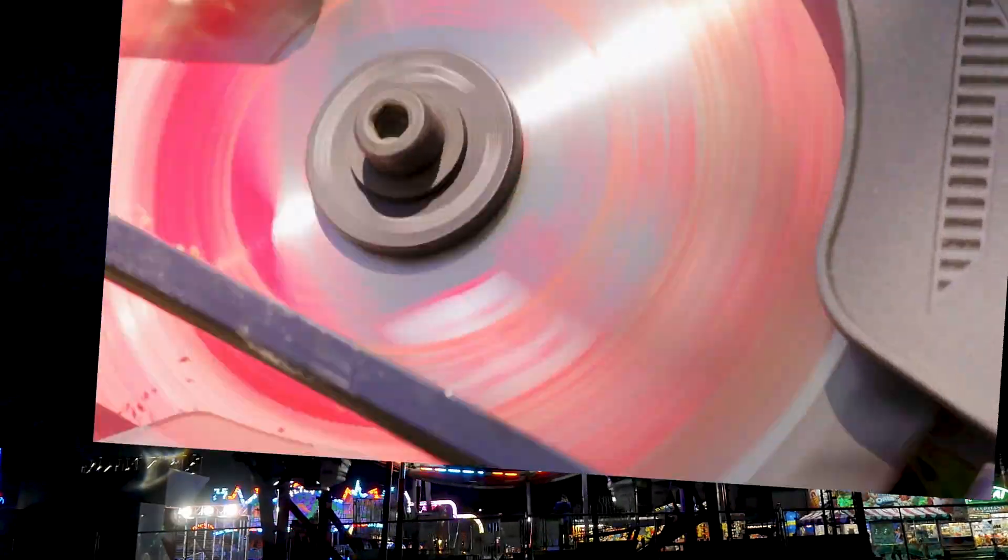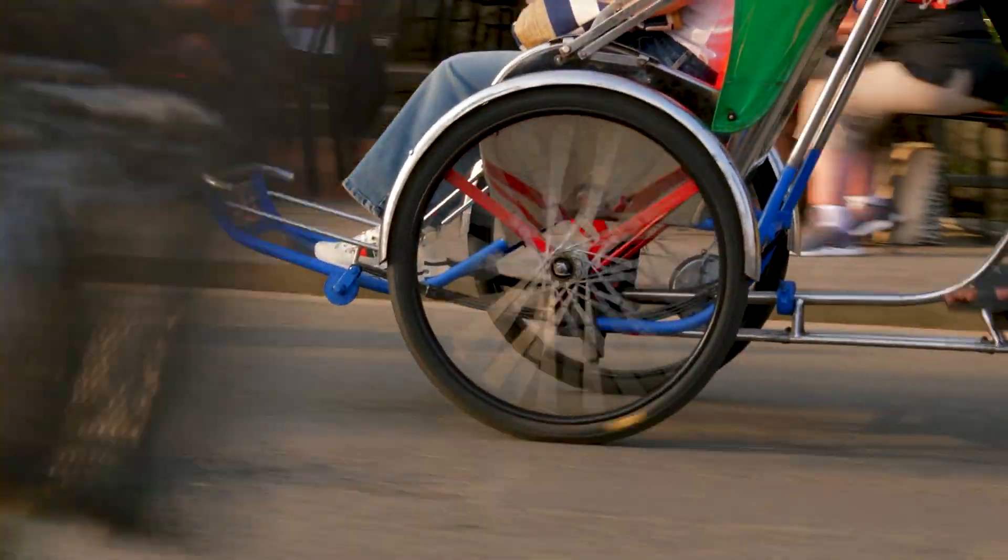Now what does a ferris wheel, a circular saw and a bicycle wheel have in common? All of these comprise of matter that rotates about a central axis where that axis is stationary in some inertial frame of reference.